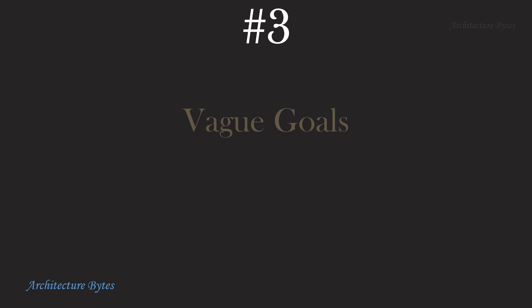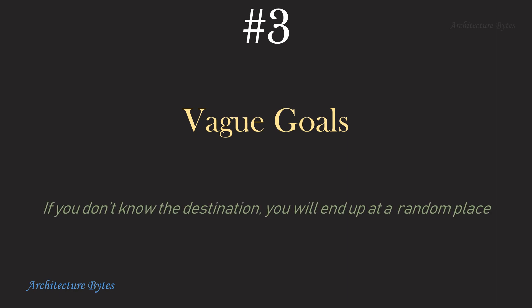At number 3: vague goals. Many projects start with a vague idea of what they want to achieve. For example, "we would like to build a data warehouse that should take any input and produce any output." This is not a goal, just a vague desire. Its final outcome will be vague too. In other words, if you don't know the destination, you will end up at a random place.